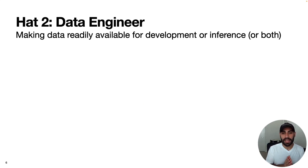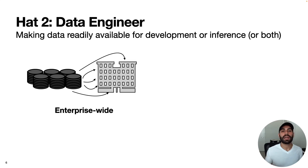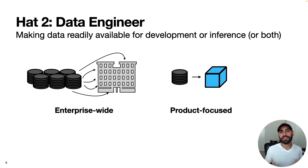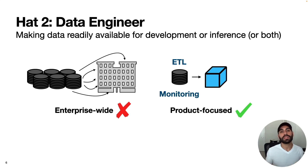Next, we have hat two: the data engineer. In the context of full-stack data science, data engineering is all about making data readily available for model development or inference. This differs from traditional data engineering at a large enterprise, where the bulk of work is often optimizing data architectures to support a wide range of business use cases. In the full-stack context, the work is typically more product-focused and more concerned with building data pipelines — creating ETL processes and data monitoring to give visibility into data flowing through your pipeline.